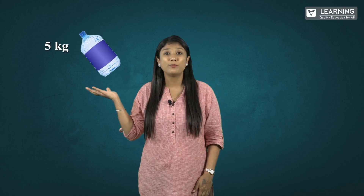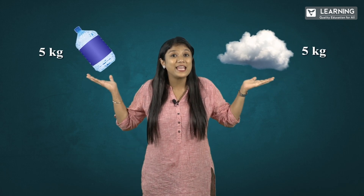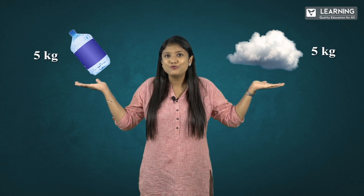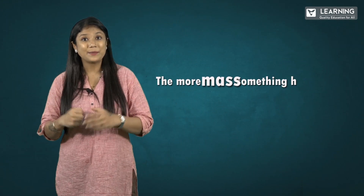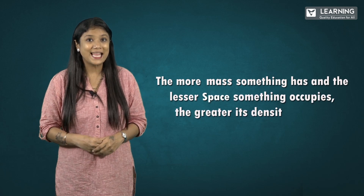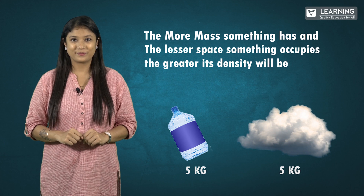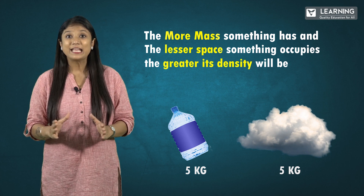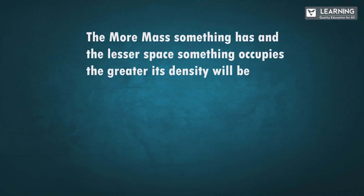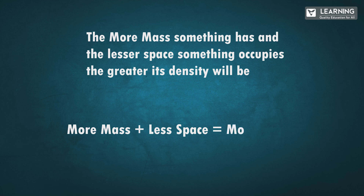Let me give you another example. Here I have a five kg water bottle — it looks so heavy. Here I have five kg of clouds. Now both of them are five kgs. Which among these two has greater density? More mass something has, lesser space something occupies, greater its density will be. Let's highlight: more mass, less space, greater density. So more mass plus less space equals more density.